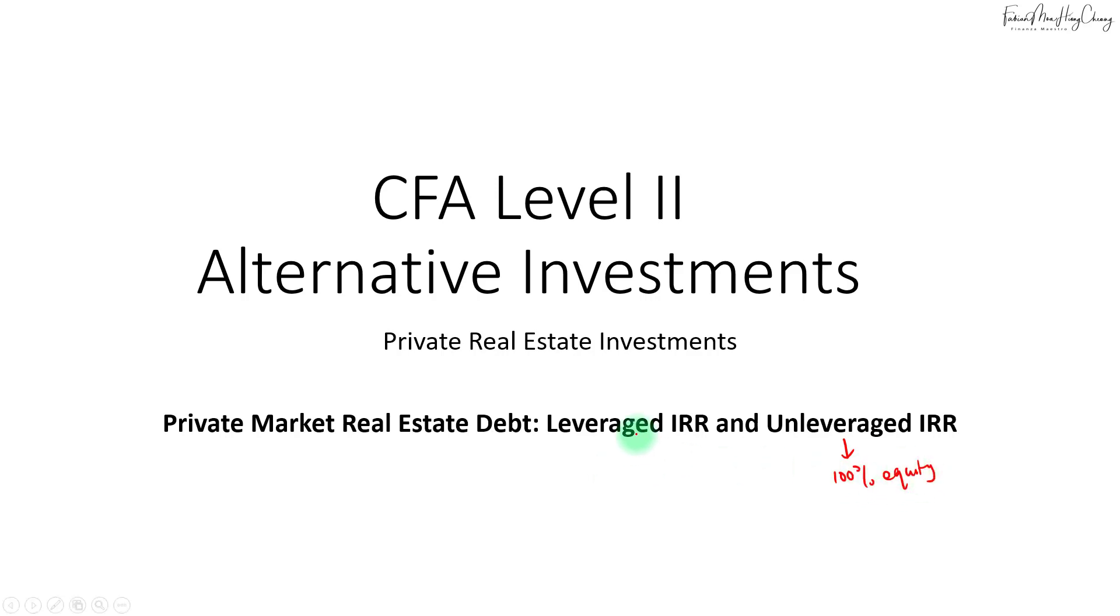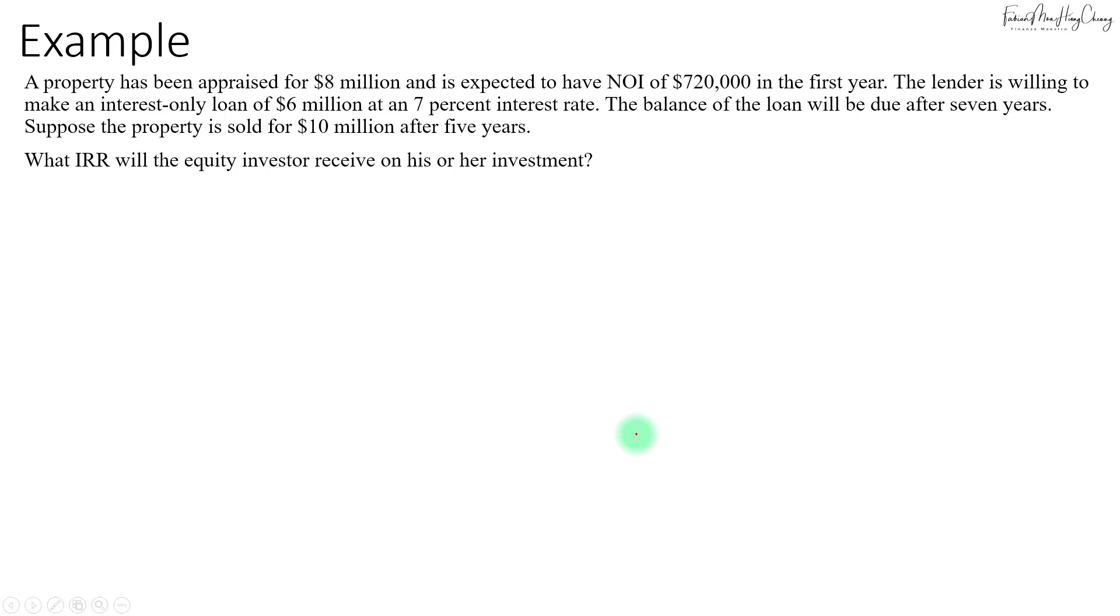Let's look at an example where a property has been appraised for $8 million and is expected to have a net operating income of $720,000 in the first year. The lender is willing to make an interest-only loan of $6 million at a 7% interest rate, and the balance of the loan will be due after seven years. Suppose the property is sold for $10 million after five years. What IRR will the equity investor receive on his or her investment?